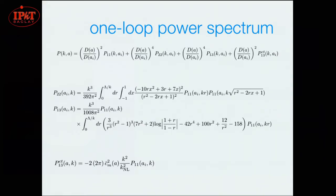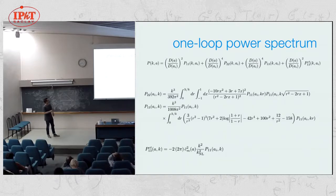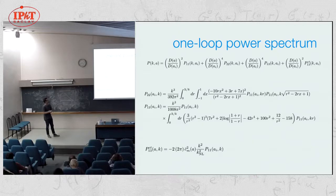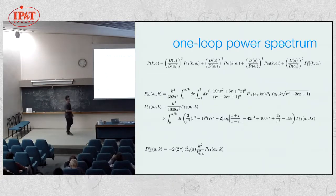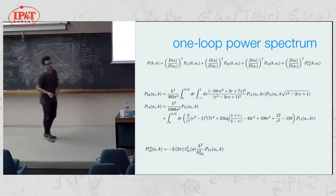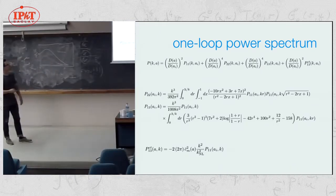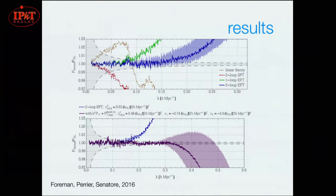These are the ingredients: the linear power spectrum, some convolution integrals to find the one loop correction, and then some counter term contribution with a fixed dependence on K, K squared times P11, and some unknown coefficient CS squared, the speed of sound or coupling constant.